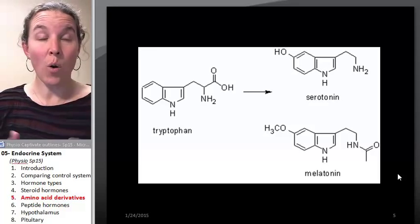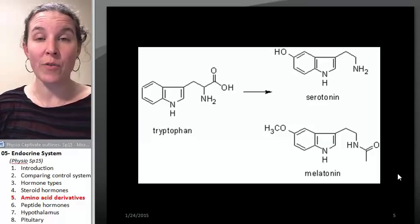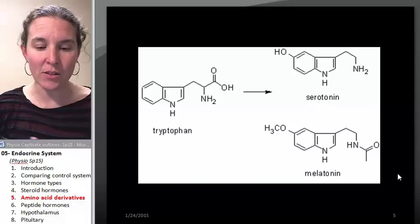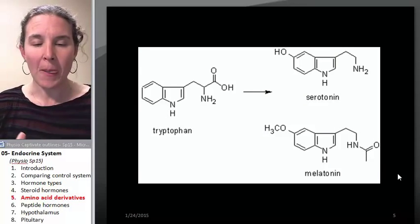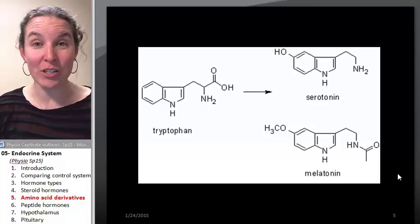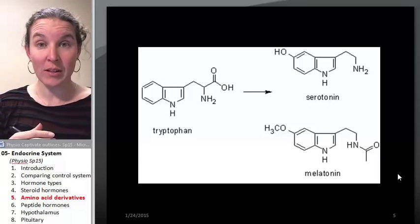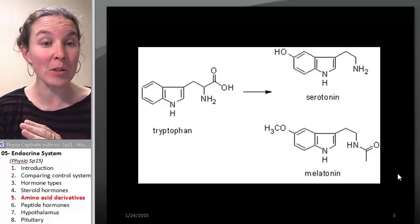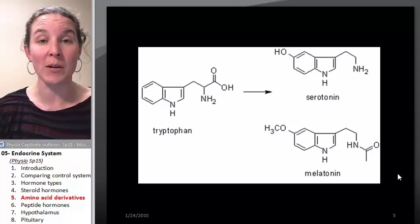There's a set of hormones that are derived from amino acids, and these are their own category. Actually, half of them have a mechanism that's similar to the steroid hormones, and half of them have a mechanism that's similar to the peptide hormones that we're going to talk about next.